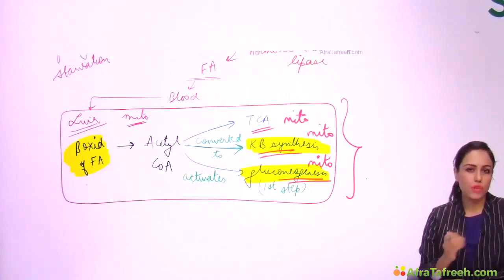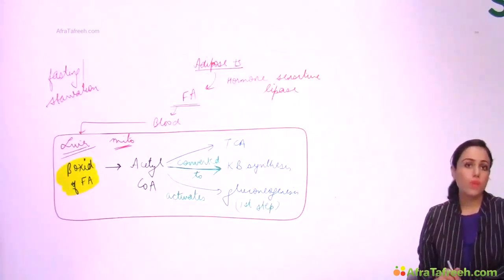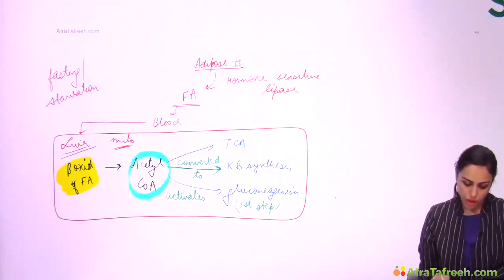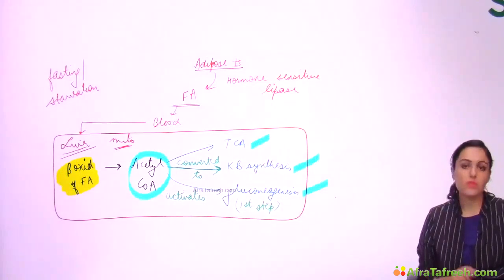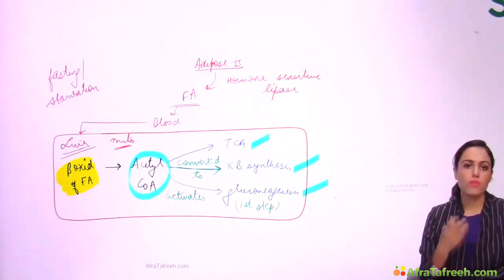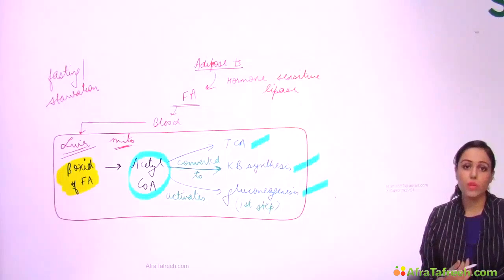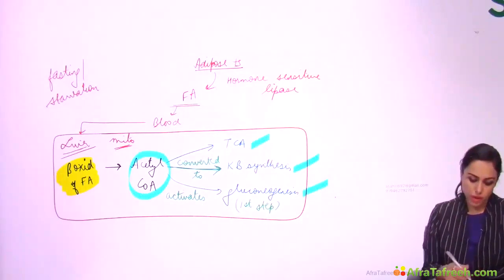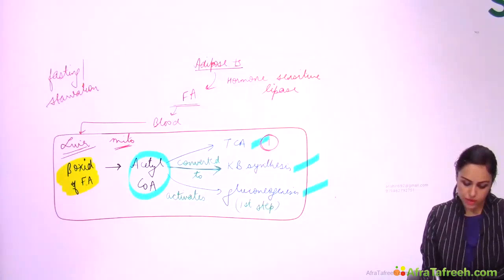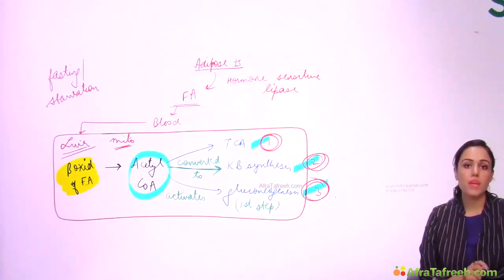Acetyl-CoA has three fates in a fasting or starvation situation: it goes into the TCA cycle, or into ketone body synthesis, or activates gluconeogenesis. The sequence is important — first fate is TCA cycle, second is ketone body synthesis, and third is gluconeogenesis. This whole sequence is happening in the liver.